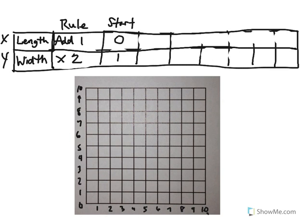Please copy this table into your notebook. Notice this time, the rule is to add 1 for x and to multiply by 2 for y. x, you're going to start at 0 and again add 1 each time. y, you're going to begin at 1 and multiply by 2 each time.